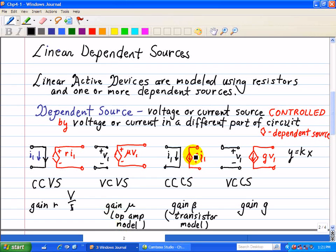For CCCS, we have current as output and current as input—a current gain which we denote as beta. This is usually a model for a transistor, which can be operated as a current amplifier.